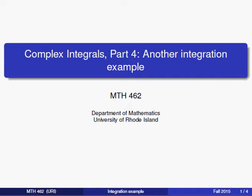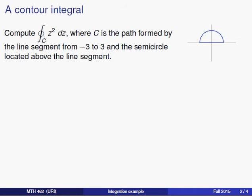Hi, in this fourth video we're going to take a look at another example of a contour integral. This time we're going to be integrating the function z squared with respect to z, and we're going to be doing it along the path C that consists of this line segment on the real axis from negative 3 to positive 3,